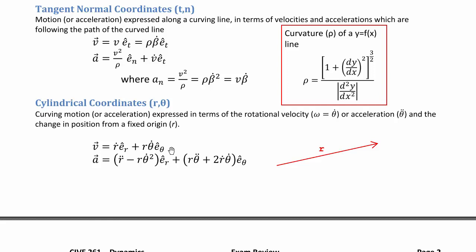By expanding and collecting terms in the r-direction, we get r-double-dot — the second time derivative of radial position — minus r times θ-dot squared, all in the r-direction. In the θ-direction, we get r times θ-double-dot, a term from the arc length function representing acceleration perpendicular to the r-vector, plus 2·r-dot·θ-dot from the product rule.